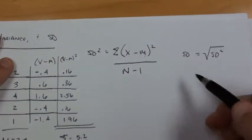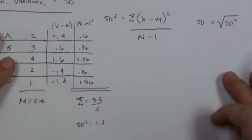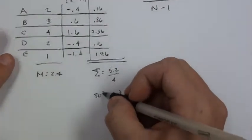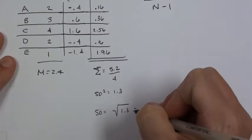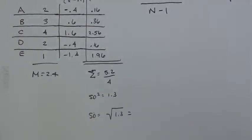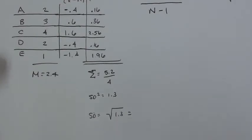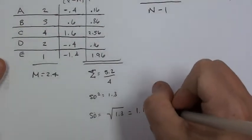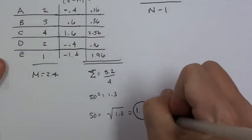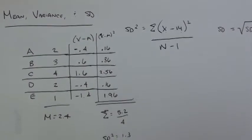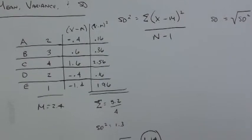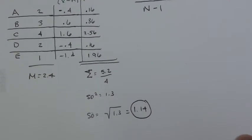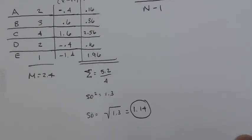Now, going back to our formula, if we take the square root, sd equals the square root of 1.3. This gives us our standard deviation, which is 1.14. So when we're calculating the standard deviation, we first calculate the mean, then we calculate the variance, then we take the square root of that, and we end up with 1.14.